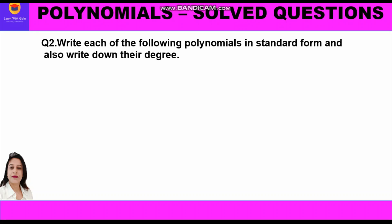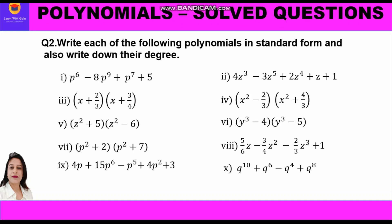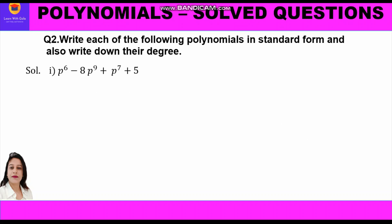Now let us move to Question 2: Write each of the following polynomials in standard form and also write down their degree. There are 10 parts. In parts 1 and 2 we just rearrange the terms from highest to lowest power. In parts 3, 4, 5, and 6 we must first simplify the brackets and then rearrange in decreasing order of powers to get the standard form.